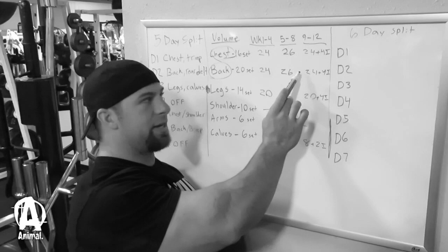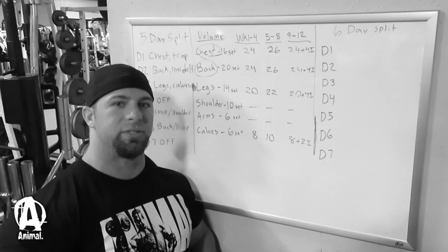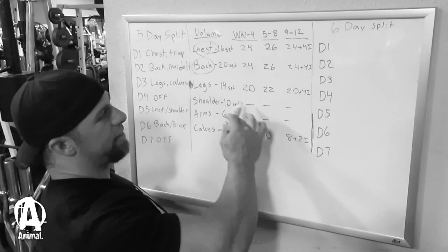So for week nine to 12, we're going to add in intensity techniques. So the 24 sets, it's going to be the same as week one through four, but four of these 24 sets will be intensity techniques like it could be rest pause sets, drop sets, forced reps, partials, things like that.